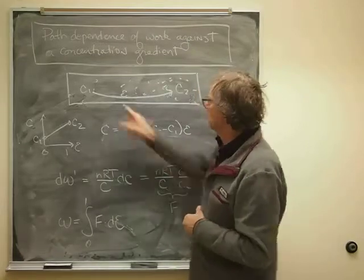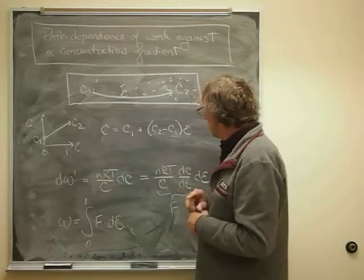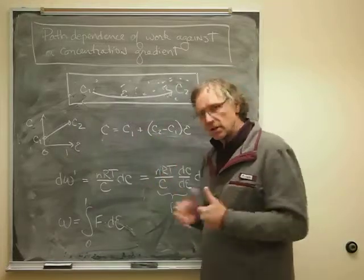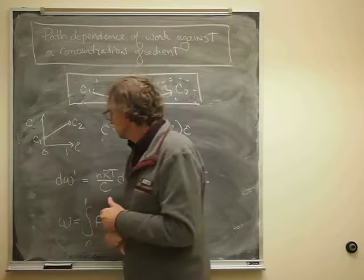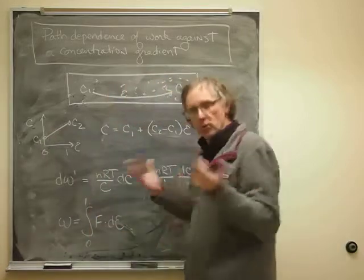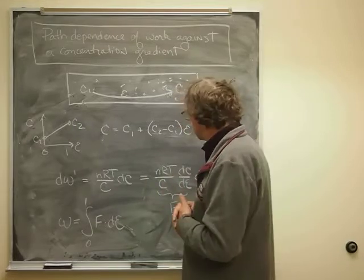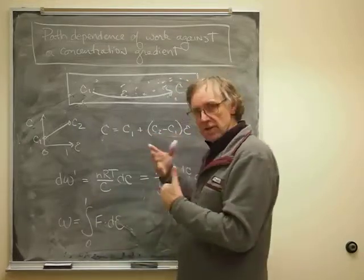When epsilon is one, then the C1s go away, and I just get C2. So it satisfies the boundary conditions. Now, one could imagine other paths. For example, I could square or cube that epsilon, and we'd have different paths, but still the same endpoints.